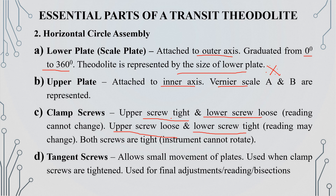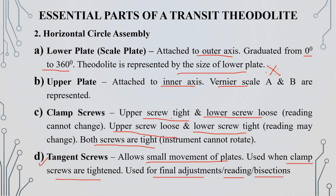We will fix the upper plate and lower plate readings at the same station. When clamp screws are tightened, we will use the tangent screws for fine adjustments. The tangent screws are used for final adjustments, readings, and bisections.